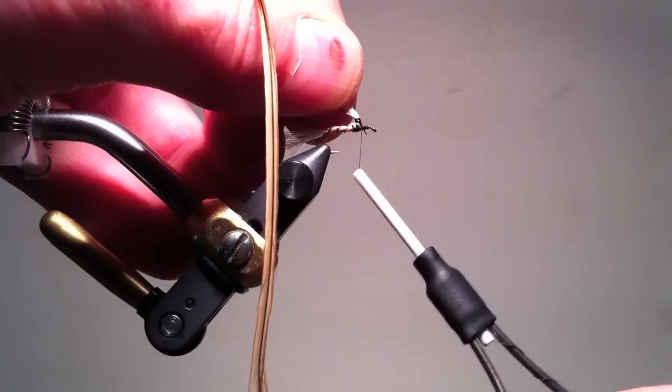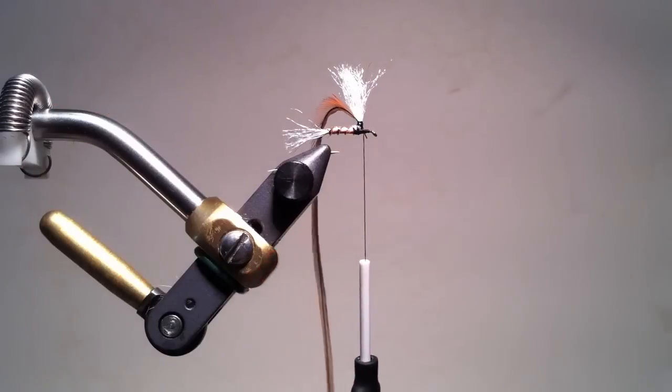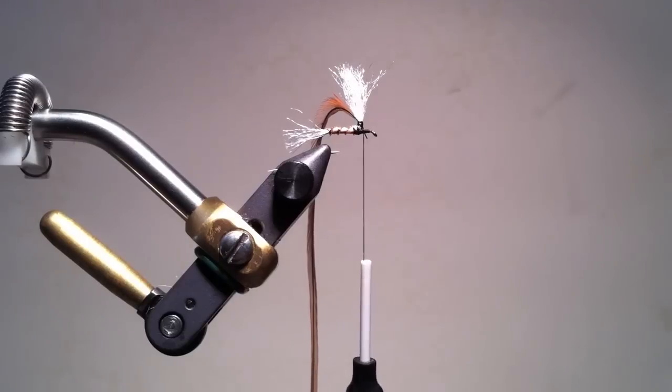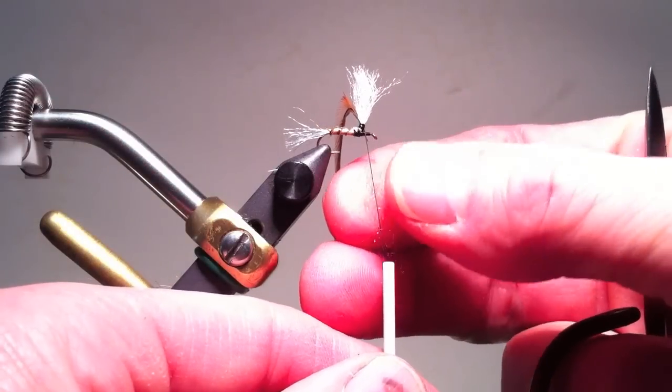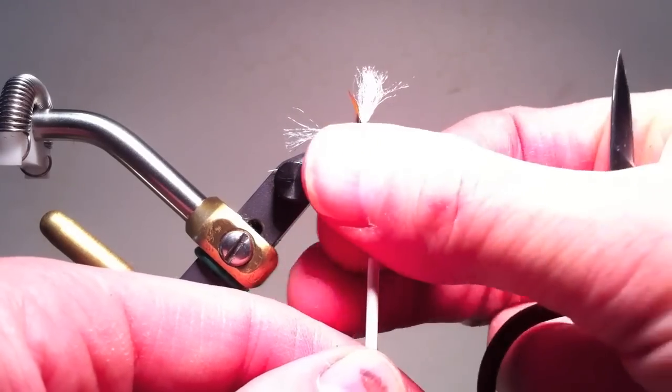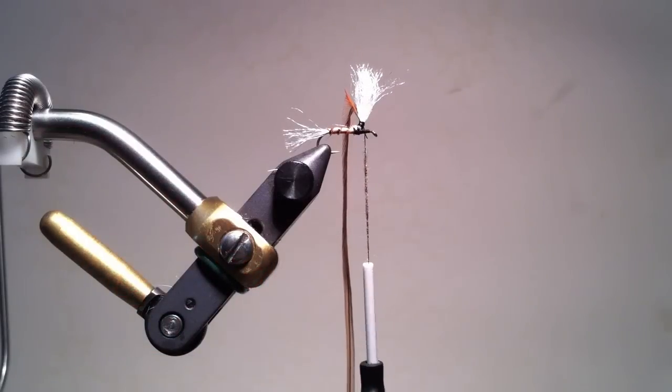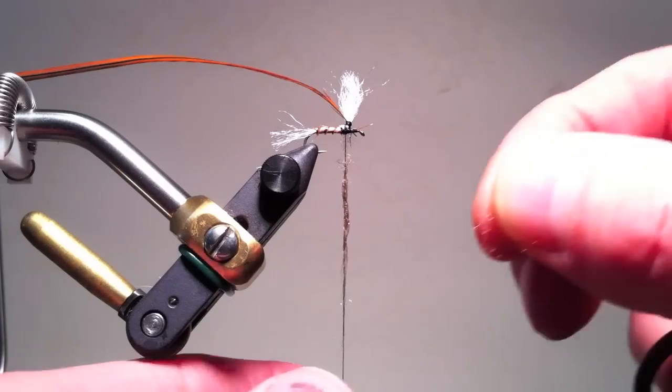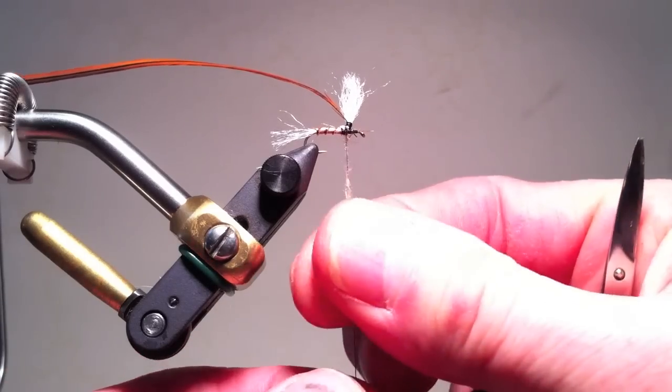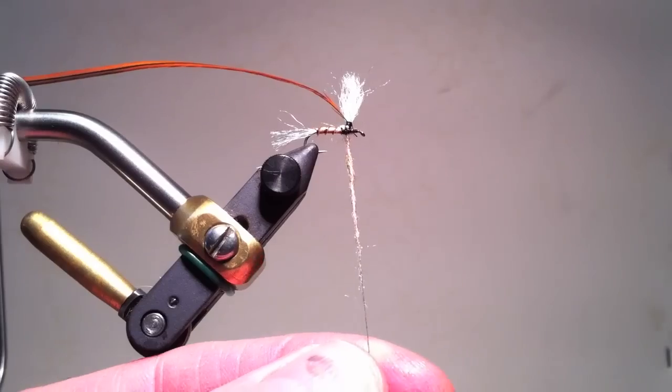After that, I bring the thread forward, and now I want to hide all of this tie-in material and put in the prominent thorax that is part of the quad. I wind dubbing on in the usual fashion, and while I could use the rotary vise with full rotation,